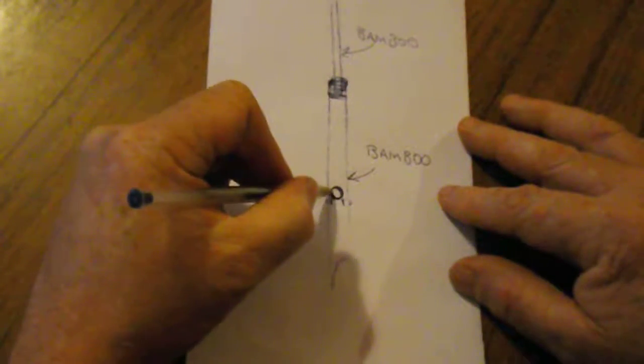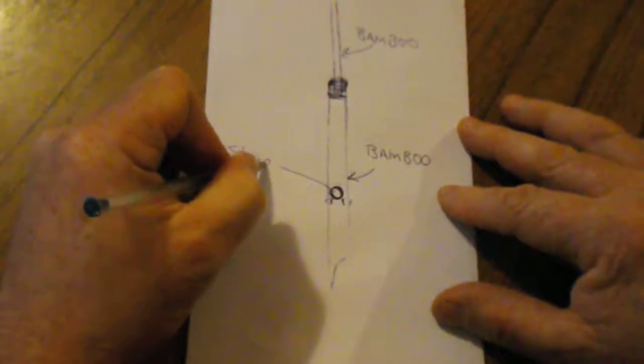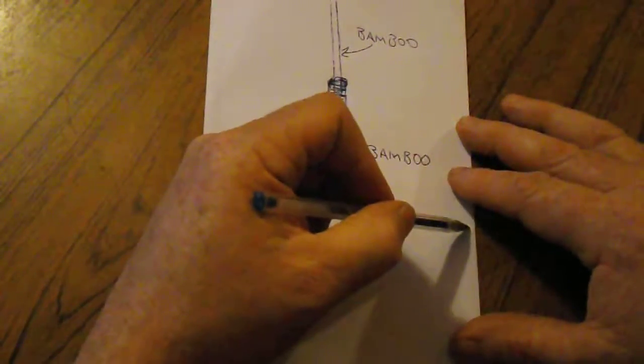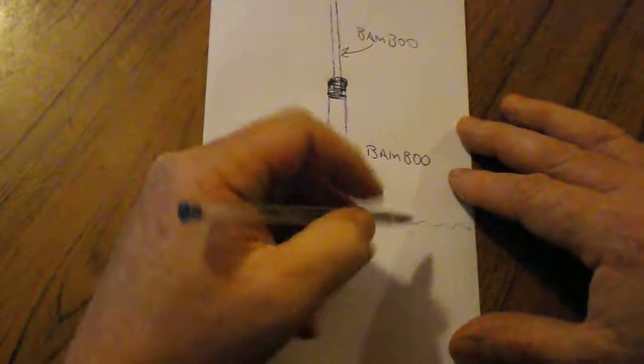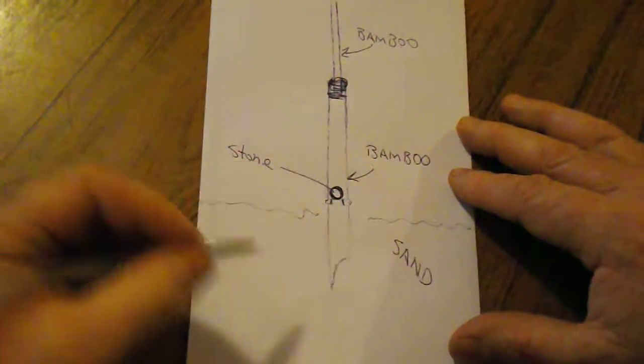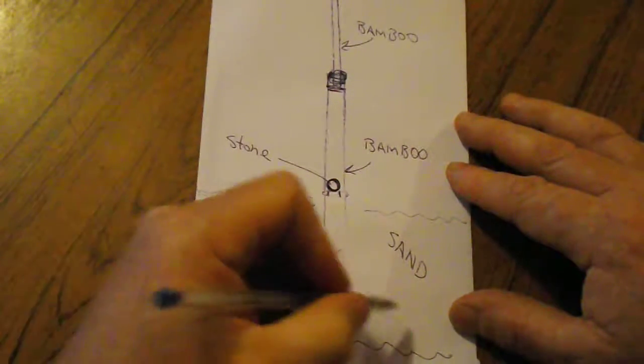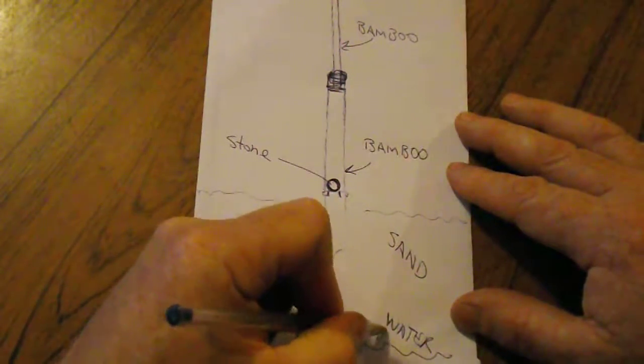And then this is a stone. And here is like sand. And then down here is like water table.